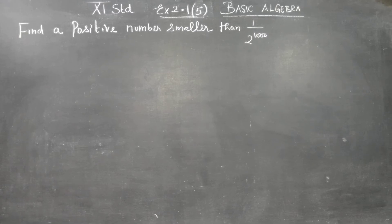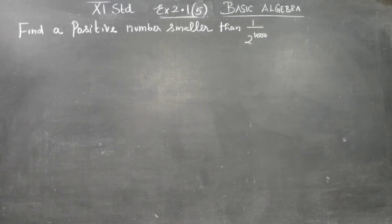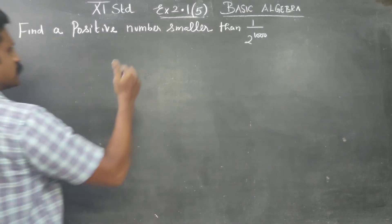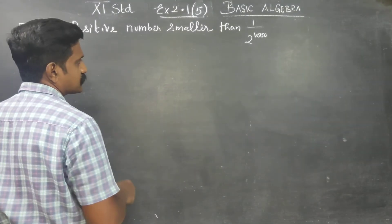Dear Levinson students, find a positive number smaller than 1 by 2 power 1000. 1 by 2 power 1000 is one of the same numbers you can find. It may be any number, an immediate number, but it must be smaller than this.